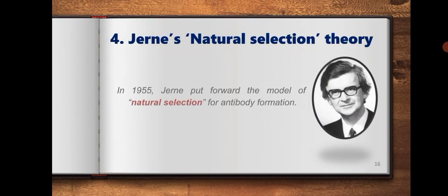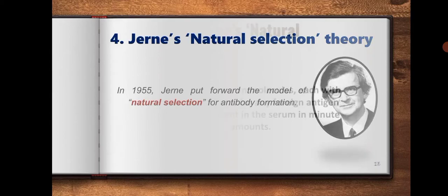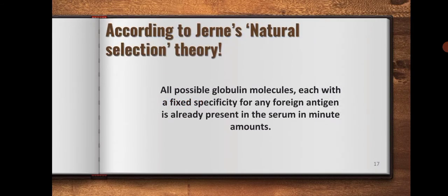Jerne's natural selection theory. In 1955, Jerne put forward the model of natural selection for antibody formation. According to this theory, all possible globulin molecules, each with a fixed specificity for any foreign antigen, is already present in the serum in minute amounts.